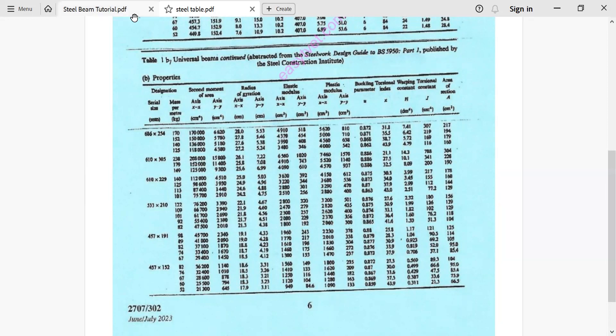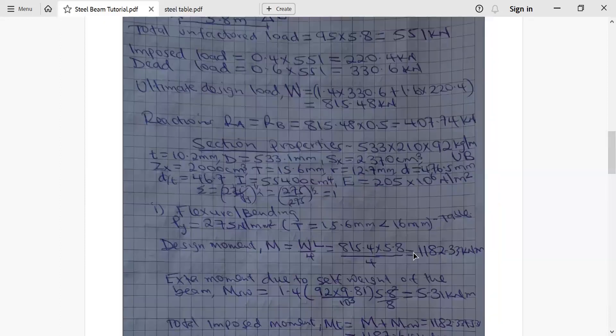From there now we will proceed to calculate the epsilon naught. This one simple here which is given by 275 over py power a half which is our case here py is 275 so it is 275 over 275 power a half giving us 1. Another thing we know that the young modulus of steel capital E is given by 205 times 10 power 6 pascals.